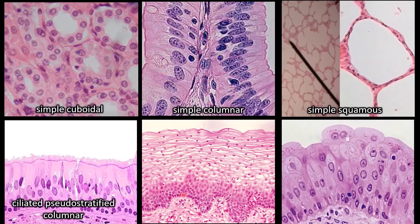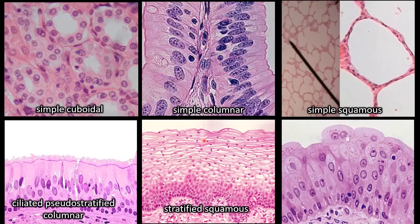In this example, the basement membrane is down here and you're seeing many cells, so it is stratified. If you pay attention to the shape of the cells at the top, you can see they're very flat little pancakes. So this is stratified squamous, even though the cells towards the bottom are more cube-shaped — we only care about the cells on the top when picking the name.